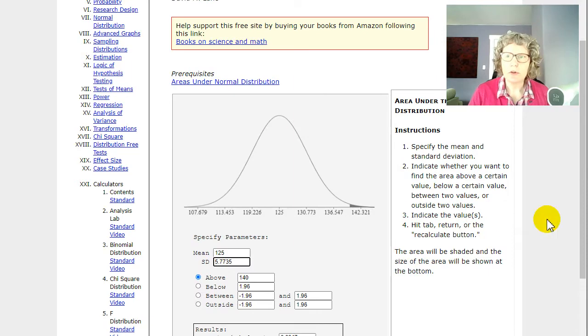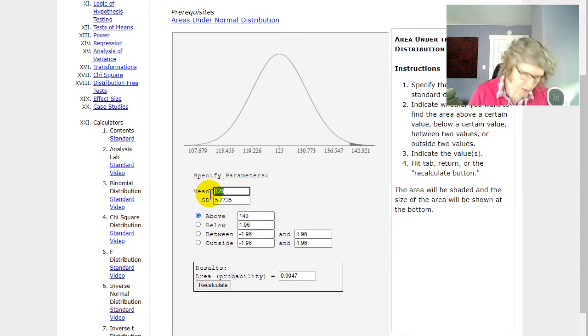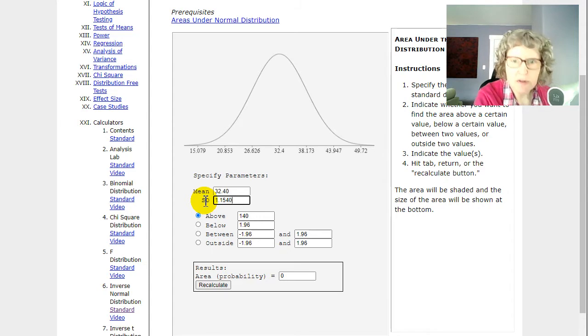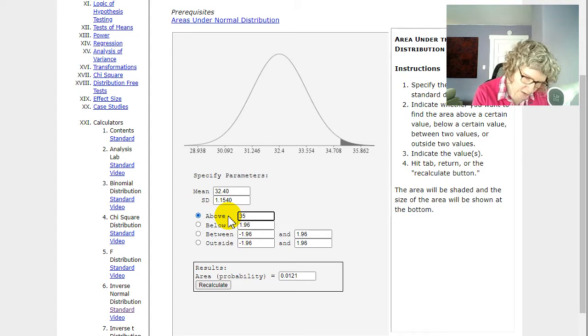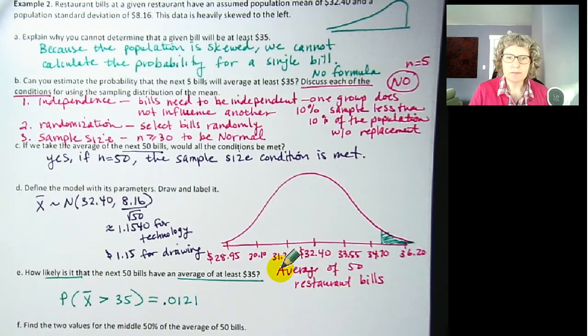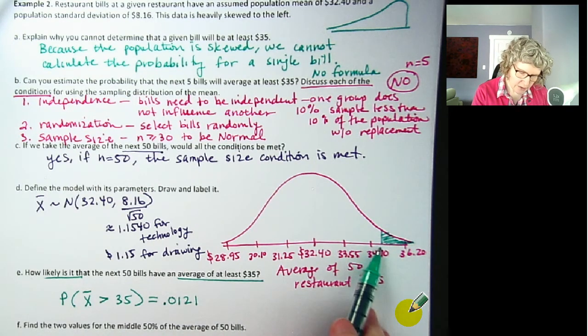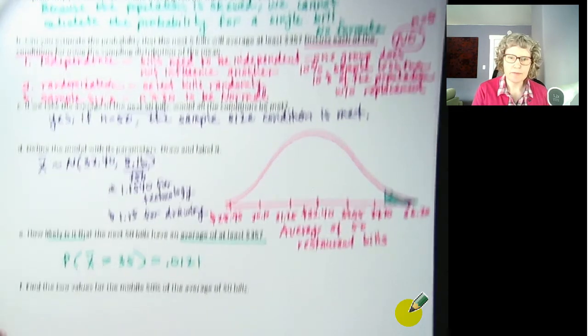So let's go back to our online stat book. Put in our new number. So now we have 32.40, and 1.154. You can put the zero or not. And above 35 bucks. Maybe this is per person. I don't know. Depends on the restaurant, right? So the probability is 0.0121. Not very big, right? Because this is all the way out here. 34.70, 36. It's somewhere in here. And it's about a 1.2% chance. Back to the notes. It's over here. 35 dollars. So it's a pretty small probability.